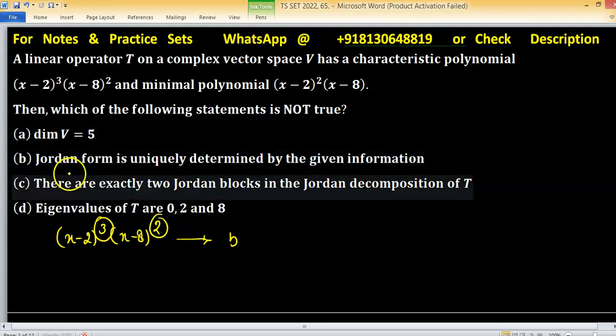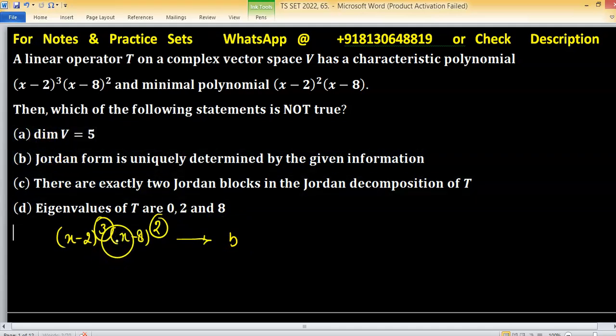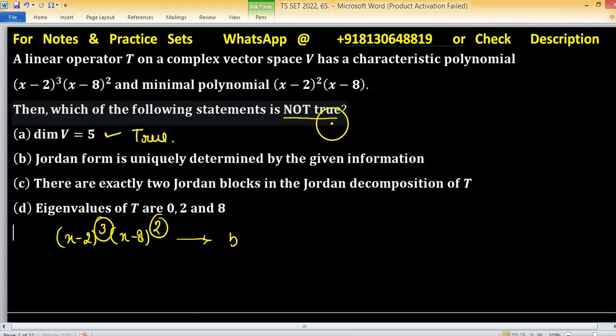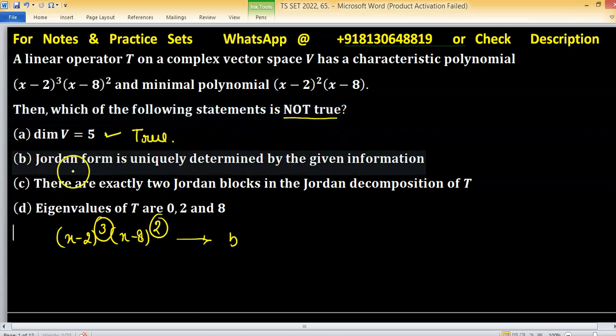This means the dimension of V, the dimension of the domain, is 5. Statement (a) 'dim V = 5' is true, but we are seeking the statement that is not true. Statement (b): Jordan form is uniquely determined